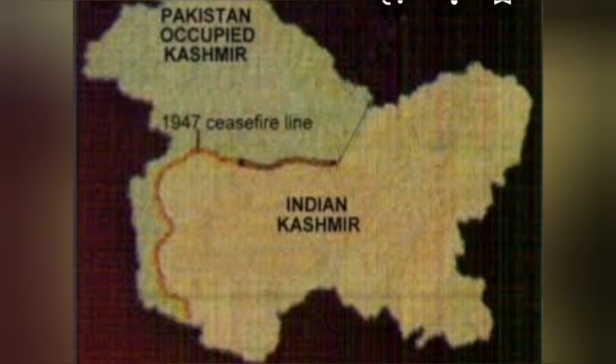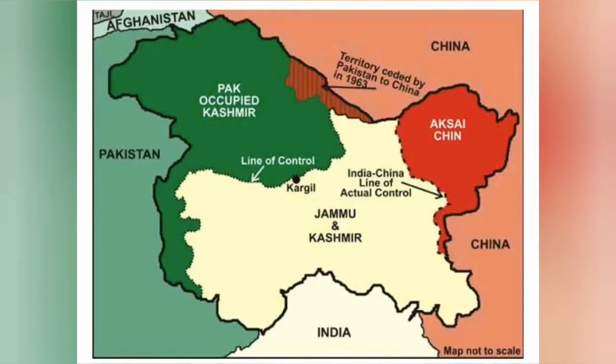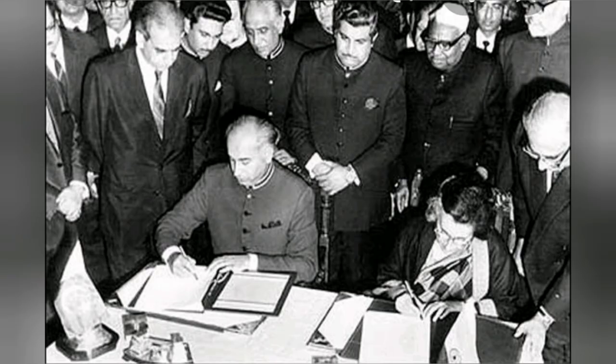This line was formally redesigned on 3rd July 1972 by the Shimla Agreement, signed by Prime Minister Indira Gandhi and President Ali Bhutto of Pakistan. Under the Shimla Agreement, both countries maintained peace, friendship, and cooperation.